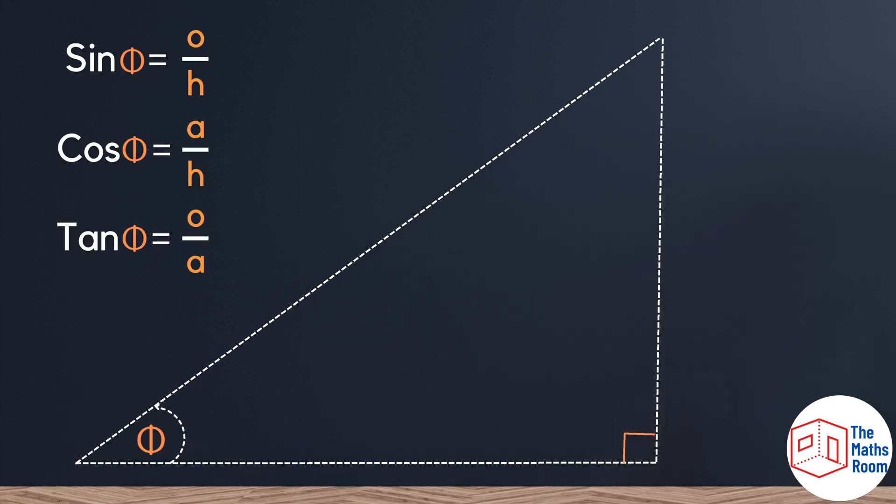This then means that we can use the rules of sine, cos, and tan to calculate the missing sides.